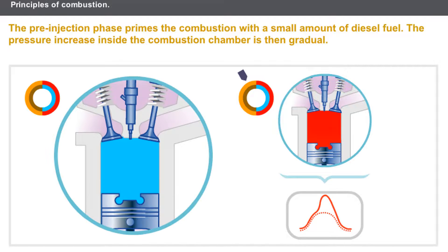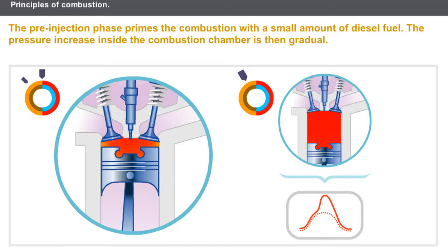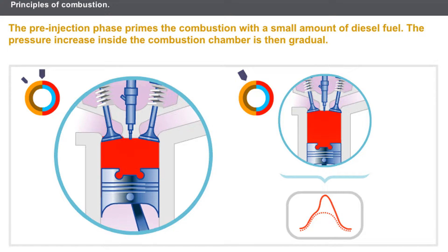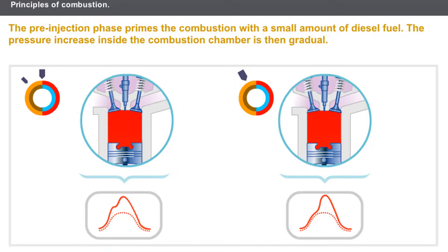Certain systems perform a pre-injection phase before the main injection phase. The pre-injection phase primes the combustion with a small amount of diesel fuel. The pressure increase inside the combustion chamber is then gradual, and the amount of vibration and noise is reduced. This phase is no longer used from a certain load onwards.